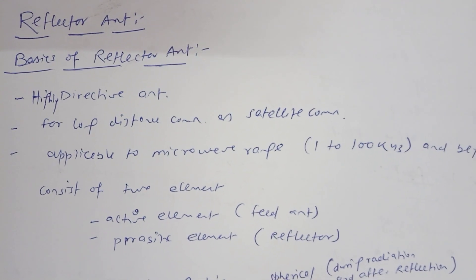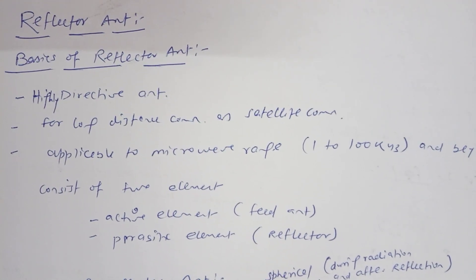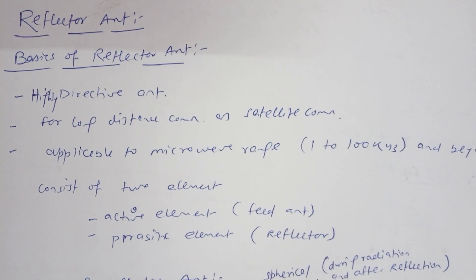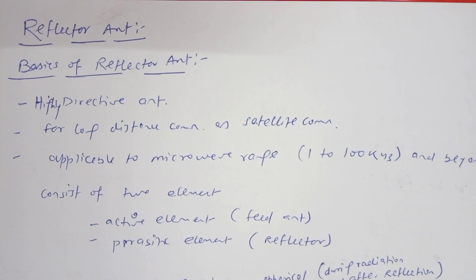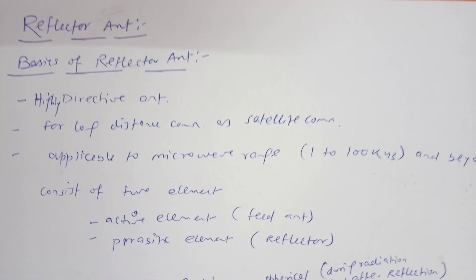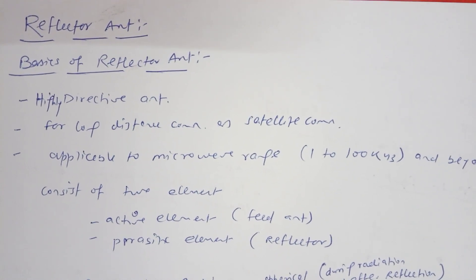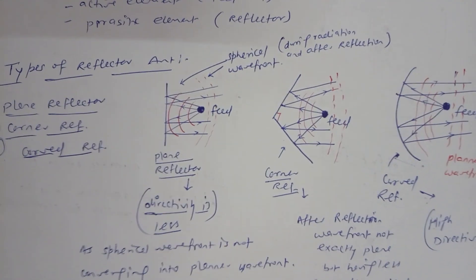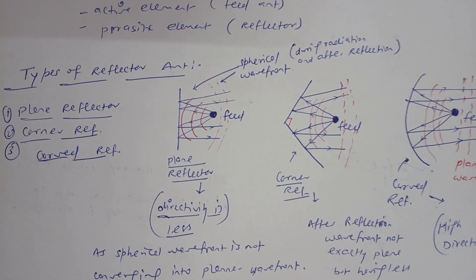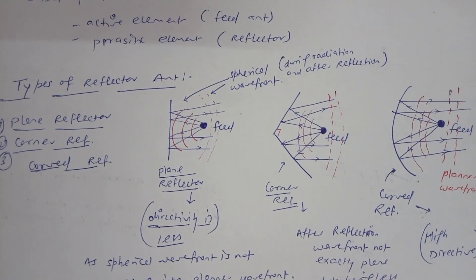In the case of the Yagi-Uda antenna, we have two elements: the active element, where we provide the power signal or feeding, and the parasitic element, which includes directors and a reflector. In the case of the reflector antenna, the parasitic element is only the reflector. There are three types of reflector antennas: the planar reflector, the corner reflector, and the curve reflector antenna.